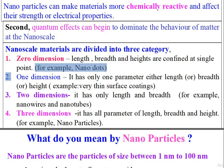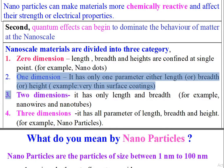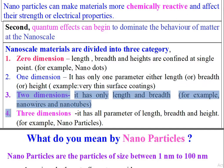2. One dimension: it has only one parameter — either length, breadth, or height. For example, very thin surface coatings. 3. Two dimensions: it has only length and breadth. For example, nanowires and nanotubes.